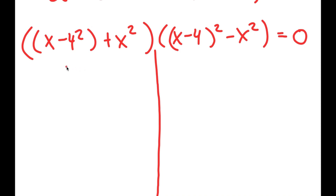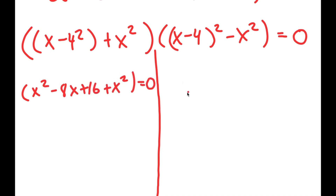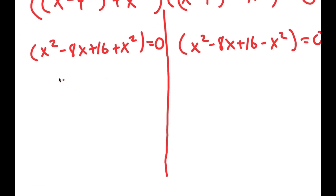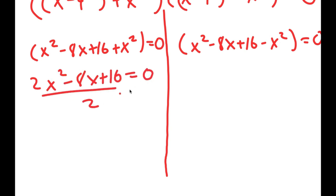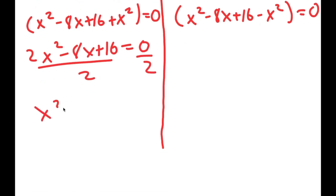Now, (x minus 4) squared is equal to x squared minus 8x plus 16. So I have x squared minus 8x plus 16 plus x squared is equal to 0. That gives me 2x squared minus 8x plus 16 is equal to 0. And if I divide both sides by 2, I get x squared minus 4x plus 8 is equal to 0.